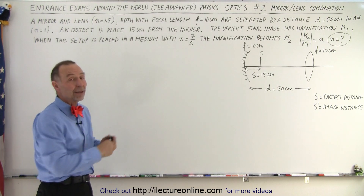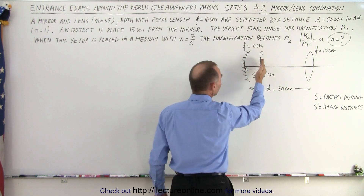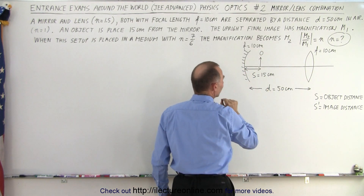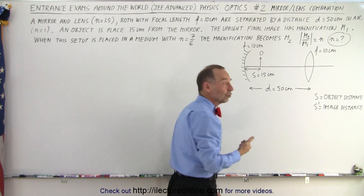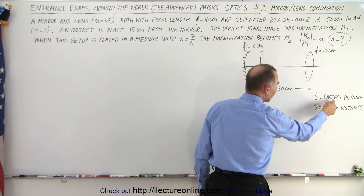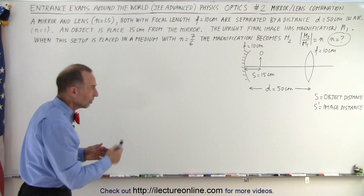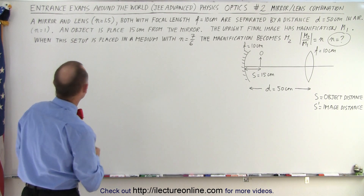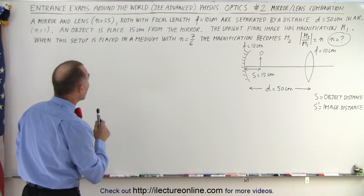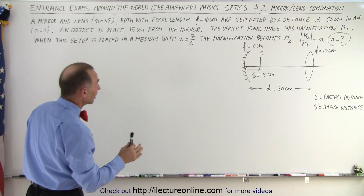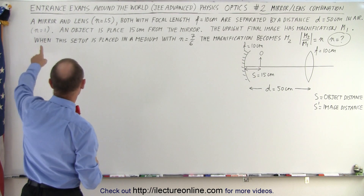They're nice enough to give you the diagram included. We're dealing with a mirror and a lens, both with a focal length of 10 centimeters. An object is placed in front of the mirror 15 centimeters away. The distance between the mirror and the lens is 50 centimeters. I use the letters S for object distance and S' for image distance instead of P and Q — some books use P and Q.